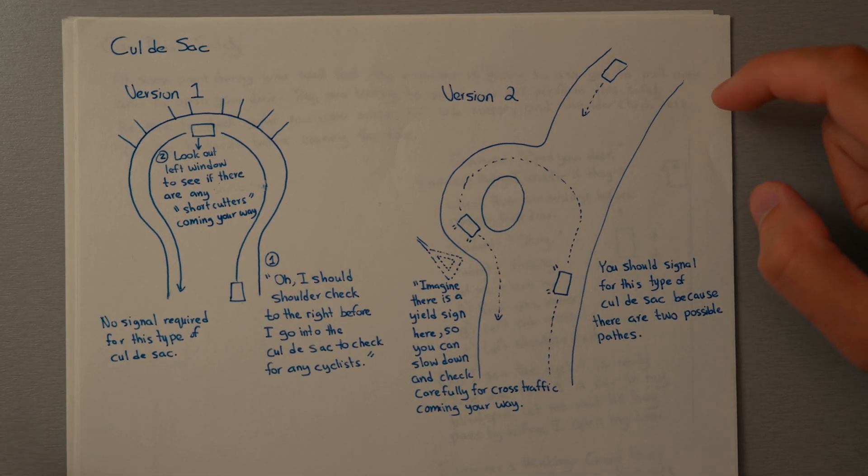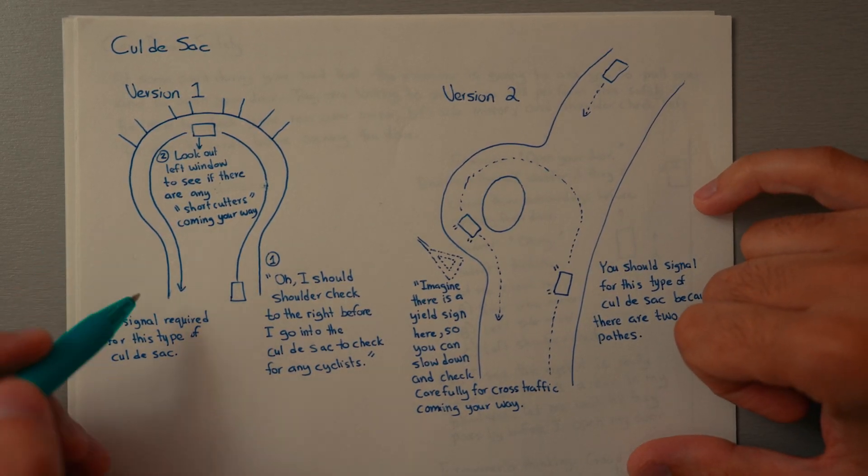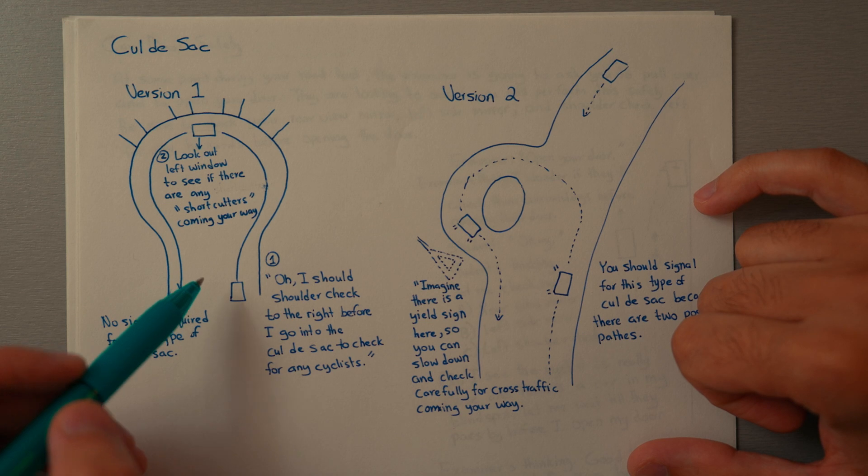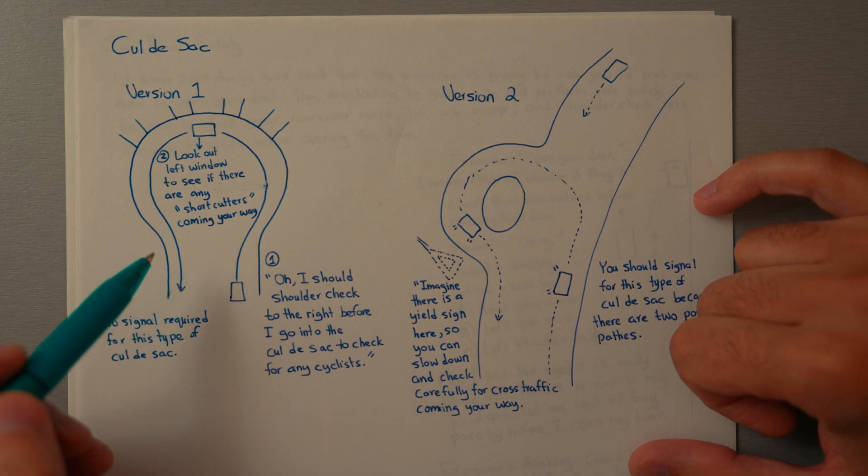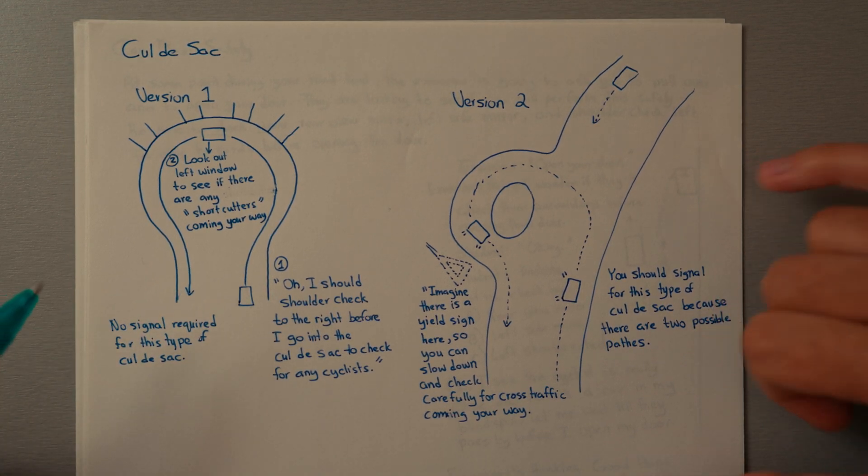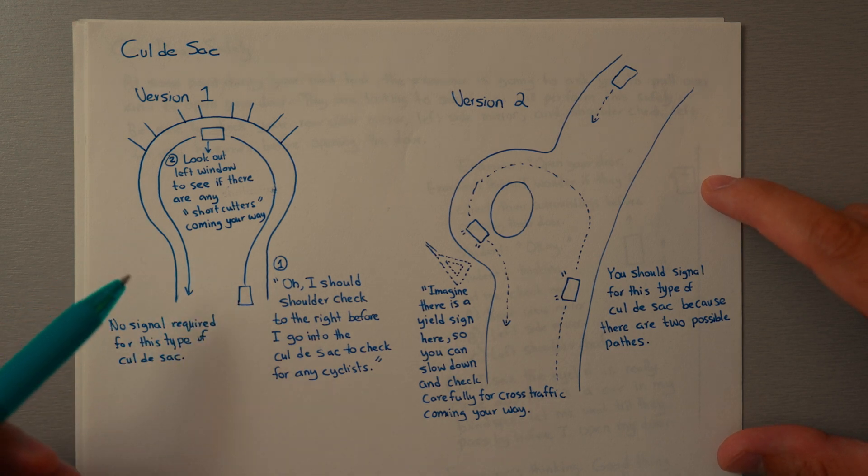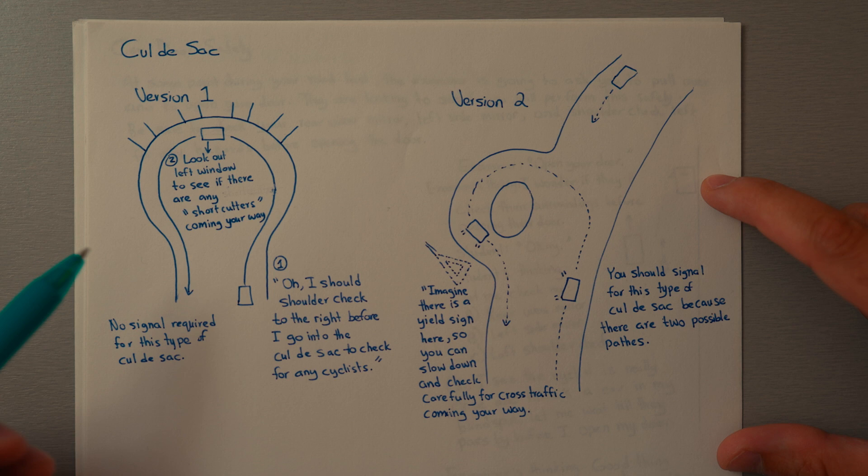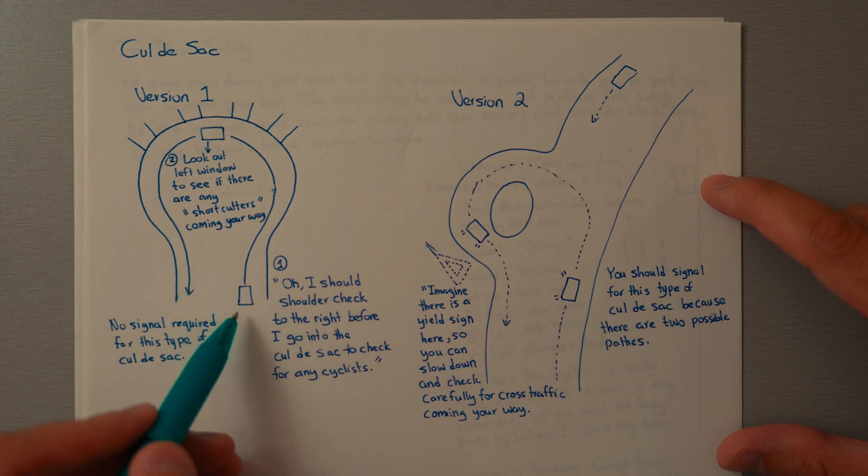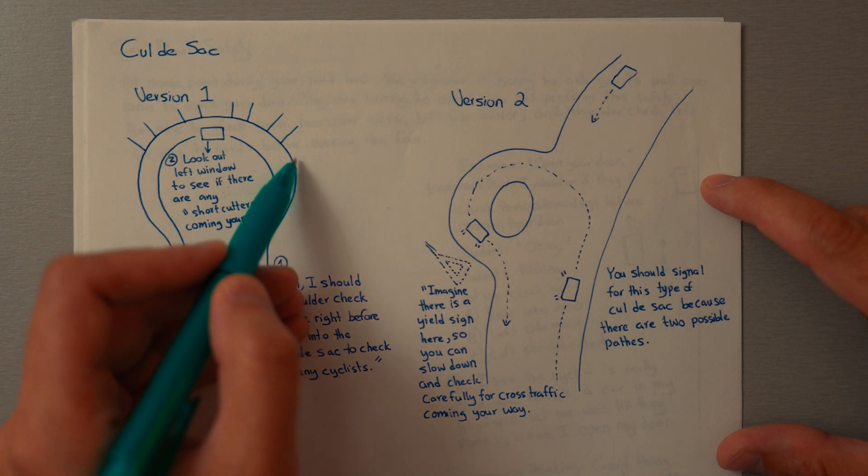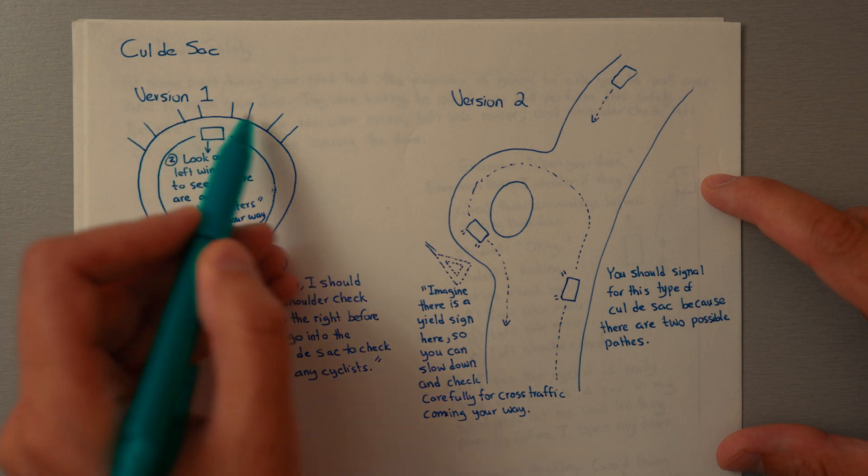Alright, let's talk about cul-de-sacs. These are likely going to be on your Class 7 road test. There are two types you can encounter. There's the one where it's just a dead-end road with driveways attached to it.